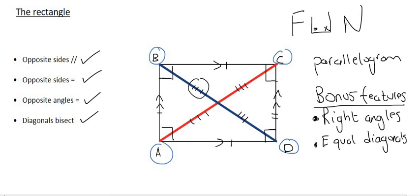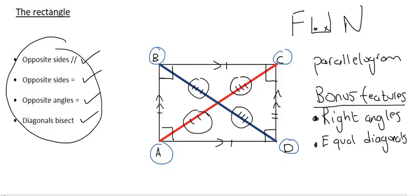So notice what I've done. I've made sure that all four of these have three lines to show that they are exactly the same. And so, in summary, a rectangle is a parallelogram. Always remember that it is a parallelogram, because it has these four properties over here. But it has a few bonus features. All the angles are right angles, and the diagonals are equal to each other.